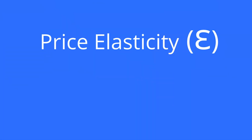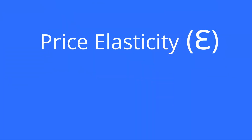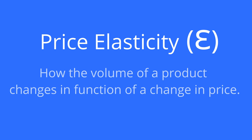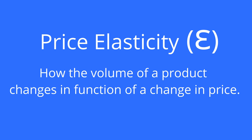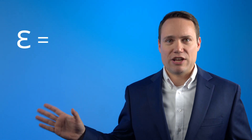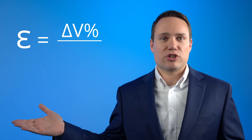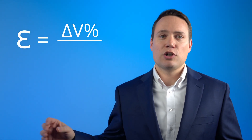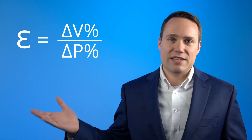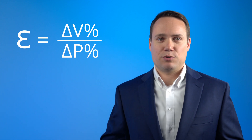I'm Philip Dauss. Thank you for joining. The price elasticity describes how the volume of a product changes in function of a change in price. Mathematically, it's a simple ratio — the division of the volume change as a percentage over the price change as a percentage.